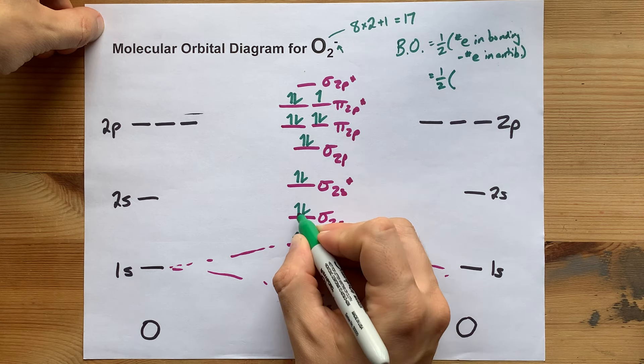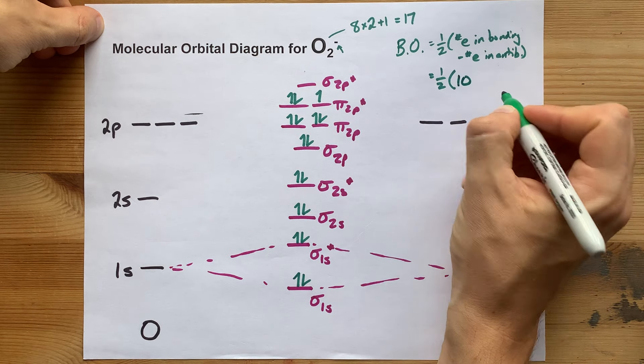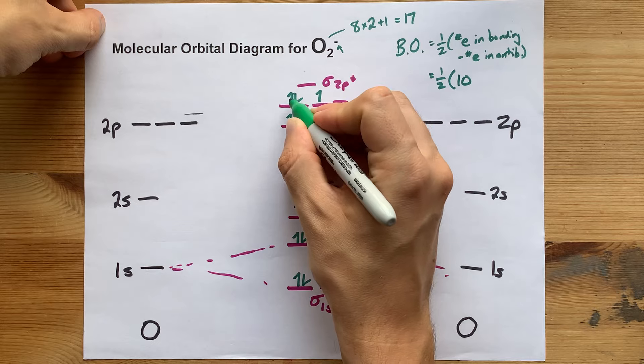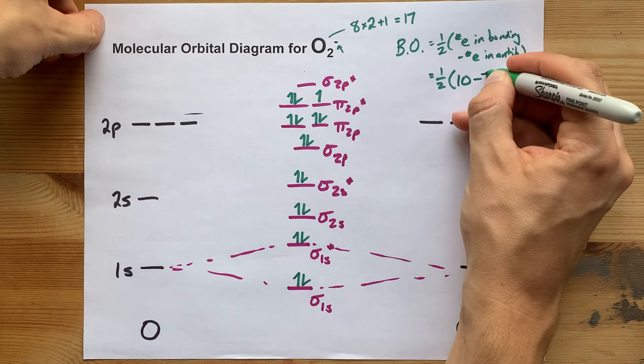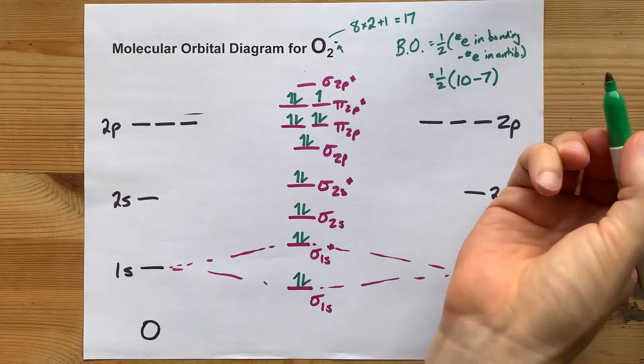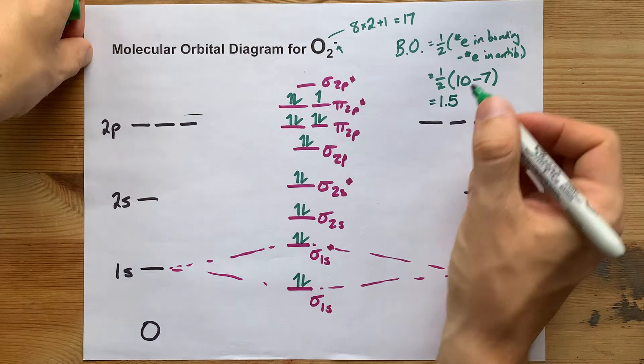1, 2, 3, 4, 5, 6, 7, 8, 9, 10 electrons in bonding orbitals. 1, 2, 3, 4, 5, 6, 7 electrons in anti-bonding orbitals. Just making sure, those add to 17. That's great. So I get a bond order of 1.5.